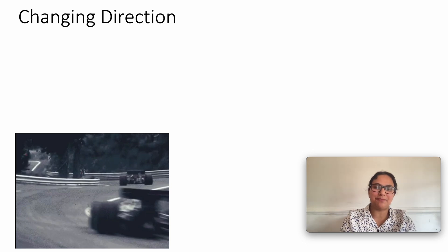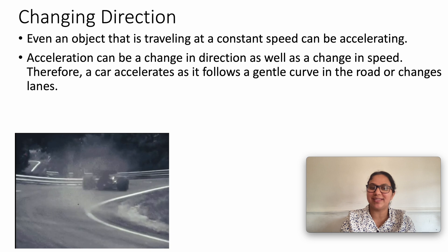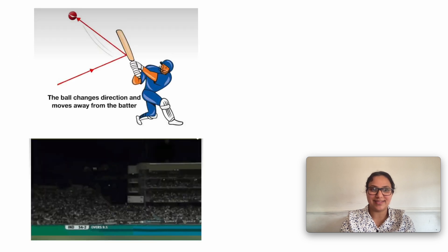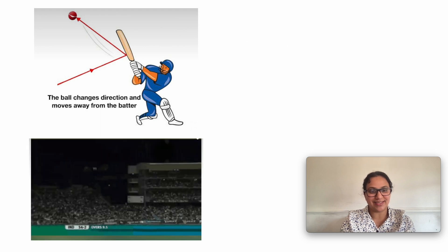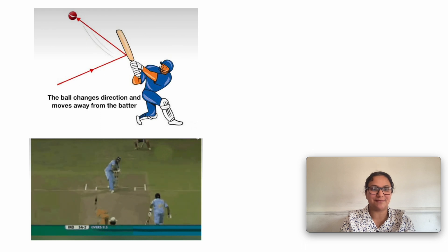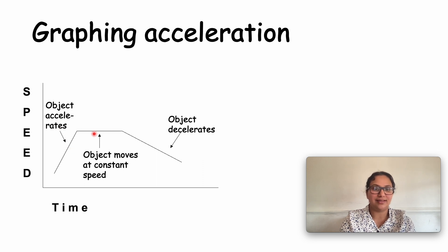The third important characteristic is that acceleration can also be a change in direction. For example, a car accelerates as it follows a gentle curve in the road or racetrack. Another example is a ball that changes direction when a batsman hits it with a bat. Acceleration can be represented using a speed-time or velocity-time graph. An increasing slope indicates the object accelerates; a constant velocity means the body is not accelerating; and a decreasing slope indicates deceleration.